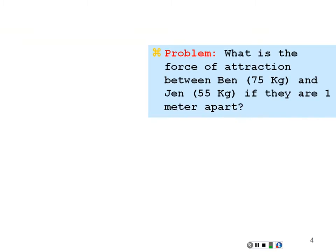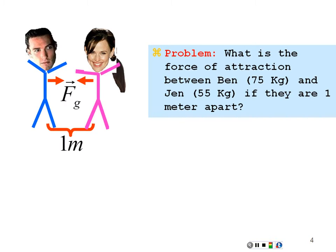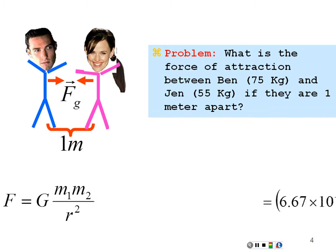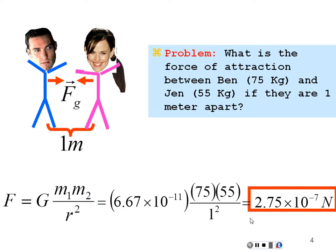Let's try an example of this gravitational force. What is the force of attraction between Ben — 75 kilograms — and Jen — 55 kilograms — if they are one meter apart? The magnitude of that force would be G times mass 1 times mass 2 over their distance squared. G is 6.67 times 10 to the minus 11; Ben is 75 kg; Jen is 55 kg; and they're one meter apart. This gives a force of 2.75 times 10 to the minus 7 newtons.